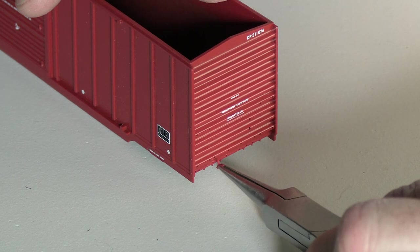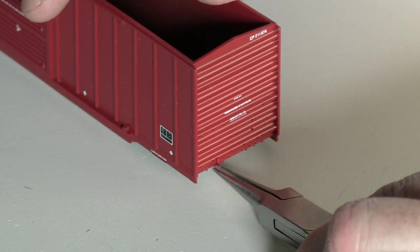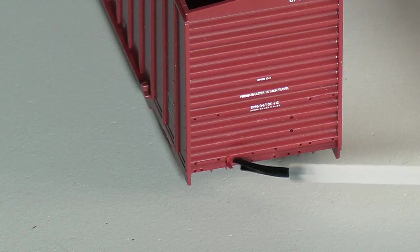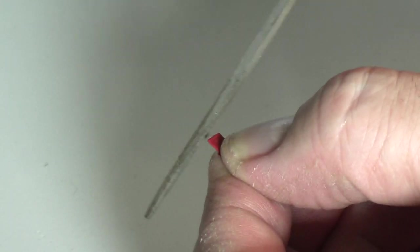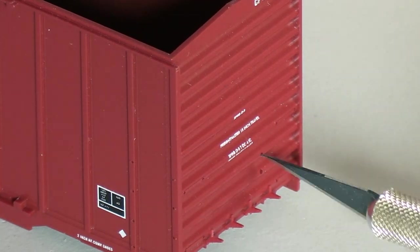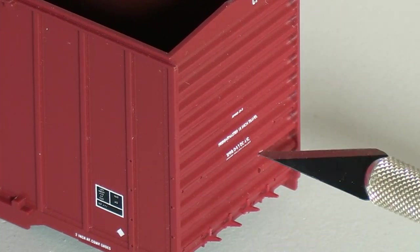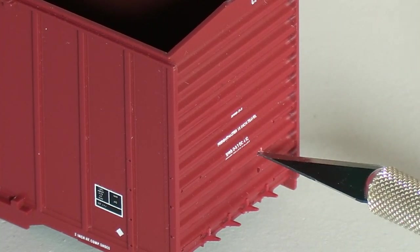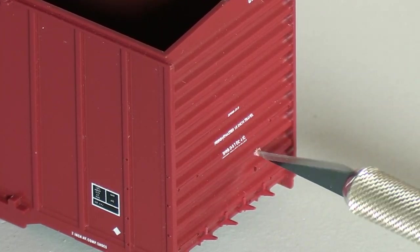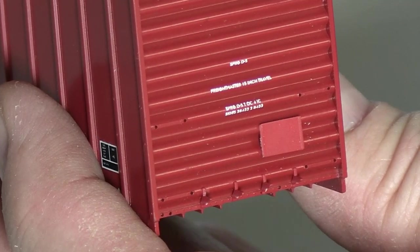Needle nose pliers can be good for placing really small parts. These are the supports for the crossover platform. I'll secure it with a little liquid styrene cement. There's a little flash on the tack board, so I'll clean that with a file. The tack boards have little pins on the back that fit into holes in the ends of the car, but they're a little bit too small. I think it's actually the thickness of the paint that interferes. I'm just going to take my less good X-Acto knife and spin it around in the holes to make them just slightly bigger. Now it fits.